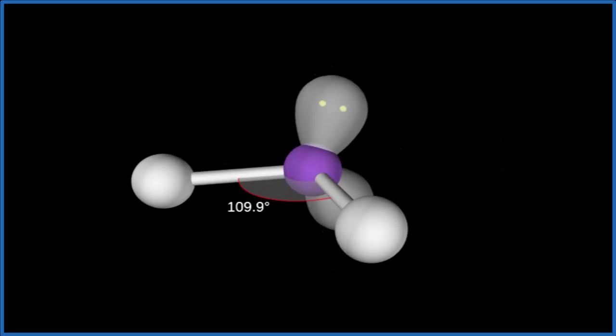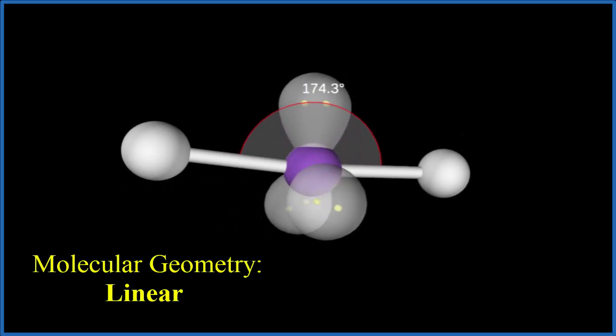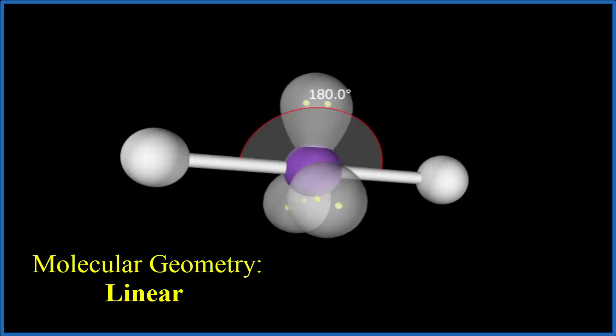Then we have three lone pairs: one, two, and three. We end up with what's called a linear molecular geometry. The bond angle here is about 180 degrees. If you ignore those lone pairs, you can see it's a straight line.